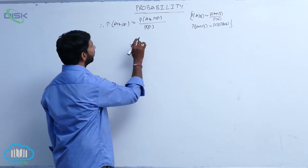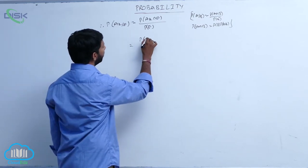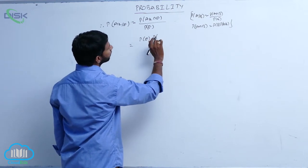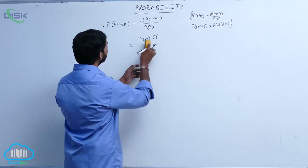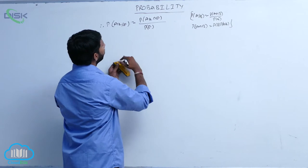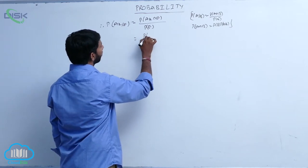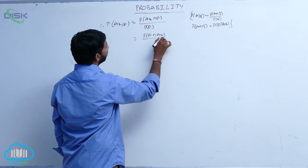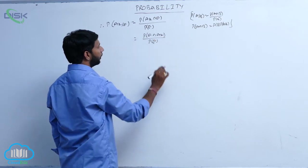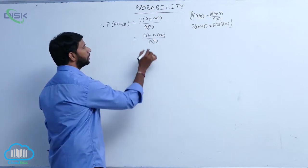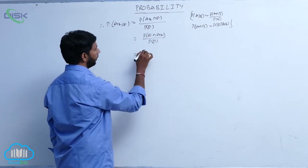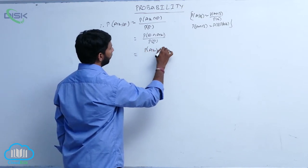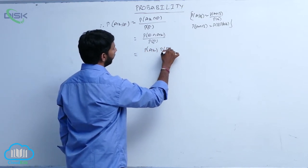This is equal to: here P of E into P of A k given E, where P of E intersection A k can be written as P of A k intersection E — both are equal, since P of A intersection B is equal to P of B intersection A. Replace P of A k into P of E given A k.